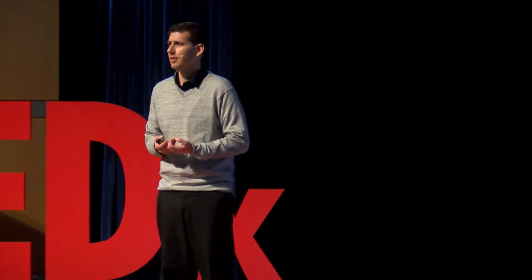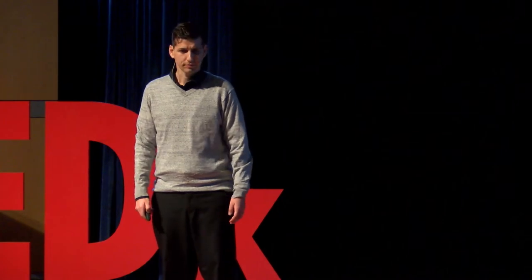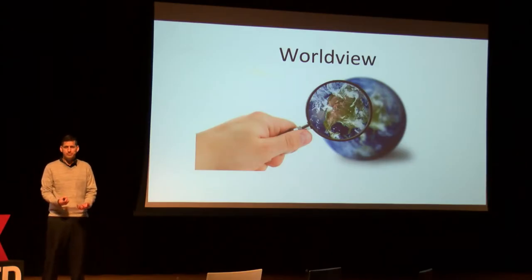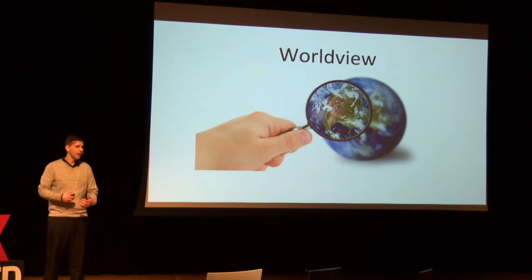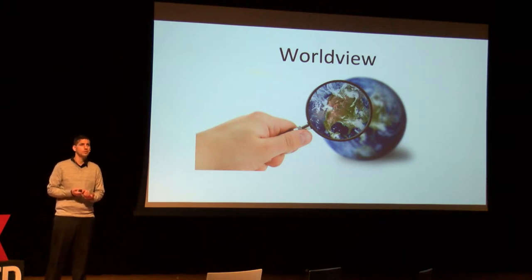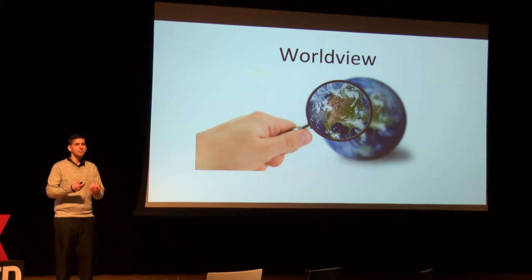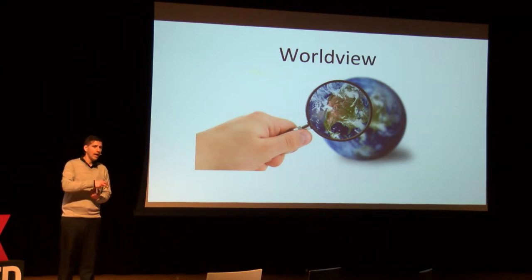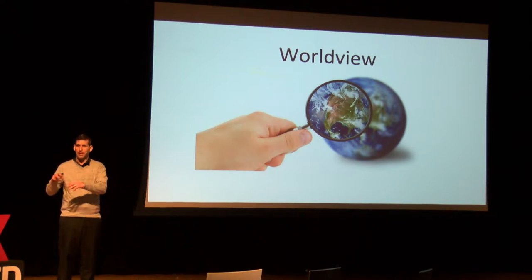What we need is a more accurate world view on how we think about these places. A world view, as I'm going to look at it, is the perspectives that we use to frame how we think about information and how we synthesize global context. A world view is going to inform every piece of information that we know, and on gaps in our knowledge, a world view is going to be what we use to fill in the blanks and assume things about the world.